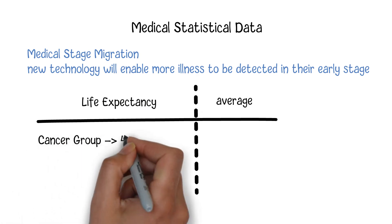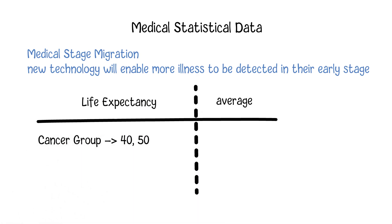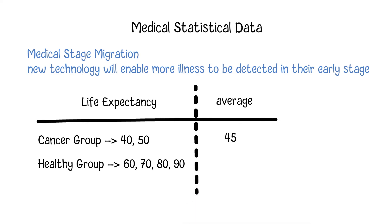One group has two cancer patients whose estimated life expectancy is 40 years and 50 years. Another group has four healthy people whose estimated life expectancy is 60, 70, 80, and 90 years old. The statistics show that the average life expectancy of both groups are 45 years and 75 years old.